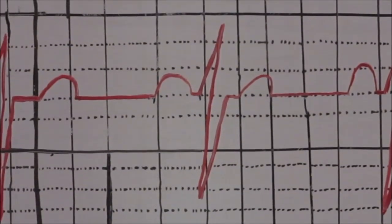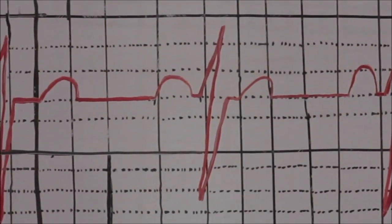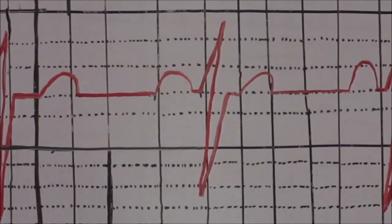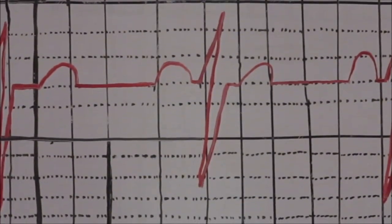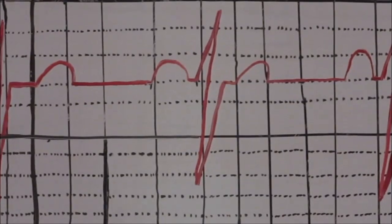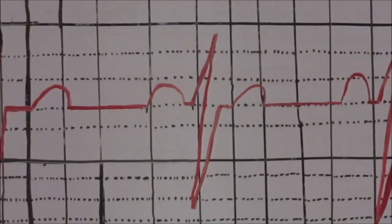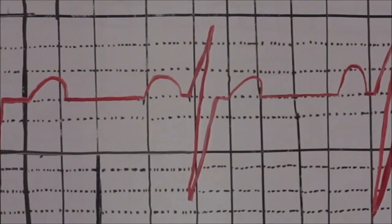We want our PR interval to be shorter than 0.20 seconds. If our PR interval is longer than 0.20 seconds, it's a 1st degree AV block.